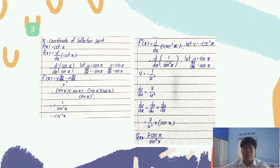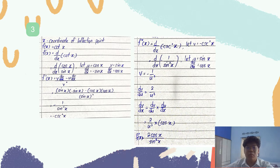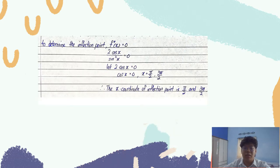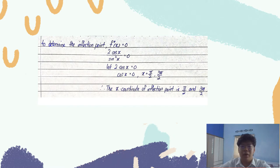Next, to determine the x-coordinate of the inflection point, we need to find the second derivative of the function by differentiating two times. The first derivative is negative cosecant squared x, and the second derivative is 2cos x over sin cubed x. To determine the inflection point, we set the second derivative equal to 0: 2cos x over sin cubed x equals 0. Setting 2cos x equal to 0 gives cos x equals 0, so x equals π/2 and 3π/2.